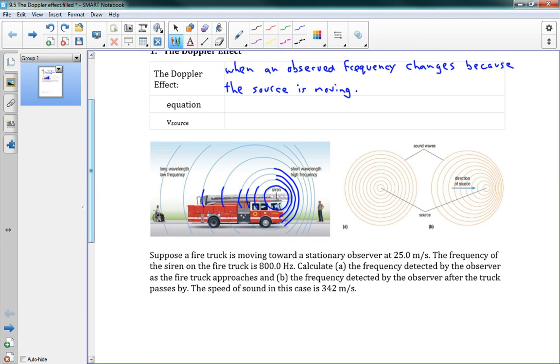That's the whole idea. We have an equation for it. It is this. F observed, so the observed frequency, is equal to the speed of sound plus the speed of the detector over the speed of sound plus the speed of the source.